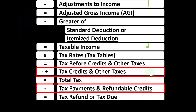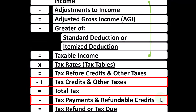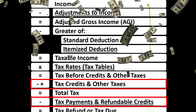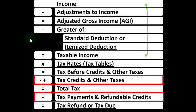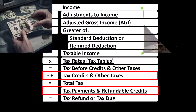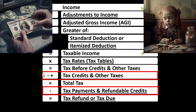Then we get to the credits and other taxes like self-employment tax. Then we have the payments in the form of withholdings or estimated tax payments to get to the bottom line — tax refund or tax due. Credits are similar to deductions in that we like them both, but if we could get $1 of credit versus $1 deduction, we typically want the $1 credit because we get the full dollar's worth, as opposed to a deduction simply decreasing taxable income, the benefit then being dependent upon the tax rate. When we think about these credits, we have to think about two major categories.